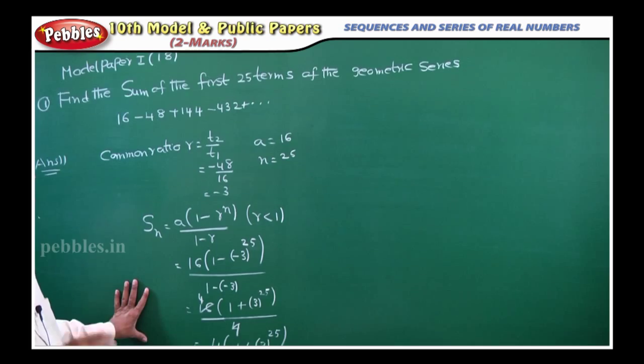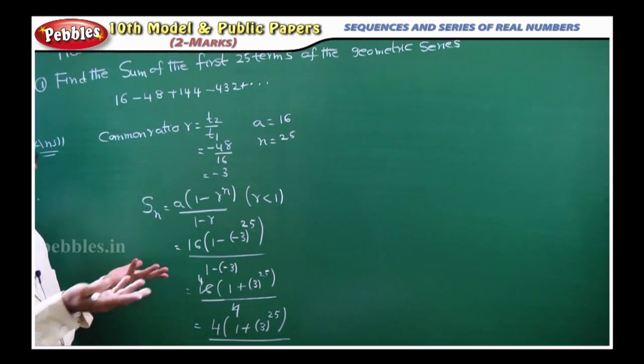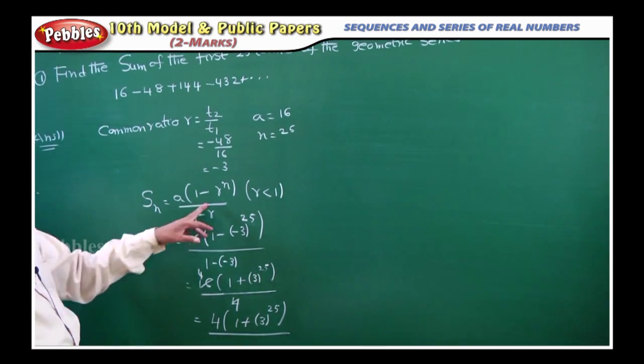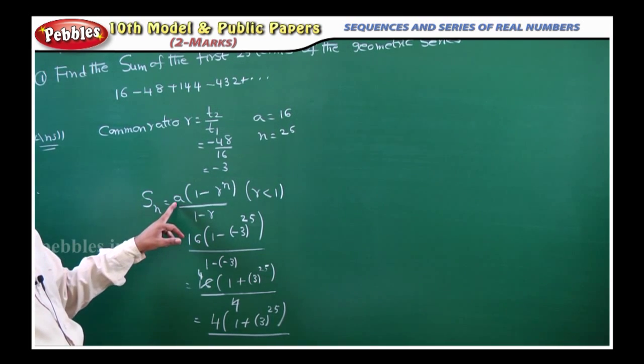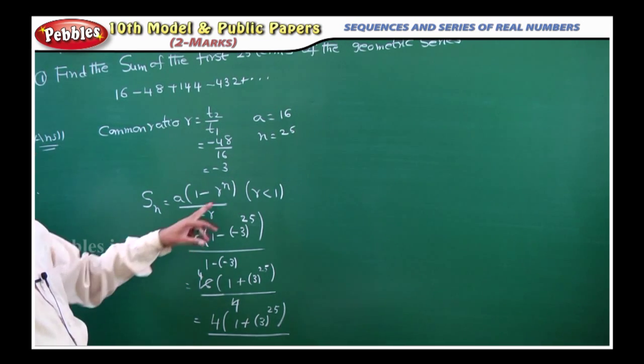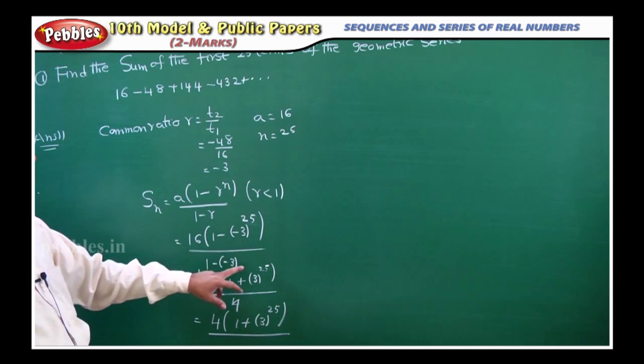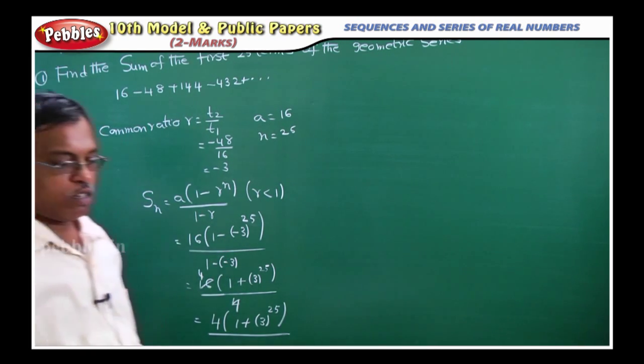Just formula you have to apply, that is it. This is nothing difficult in it. Just this is a formula you have to apply. You want to substitute A value here, common ratio and N value, then you simplify, automatically you get the answer.